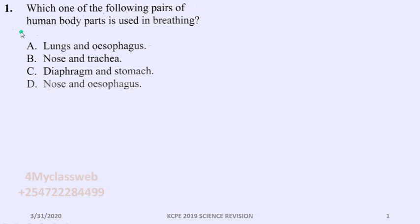It was question number one: Which one of the following pairs of human body parts is used in breathing? This question is on the breathing system work that was covered in class 5. Let us look at choices A, B, C, and D.